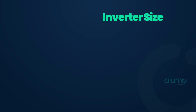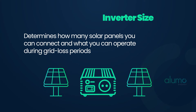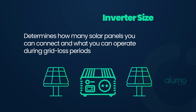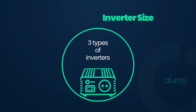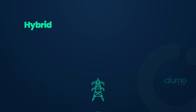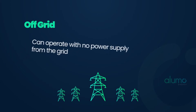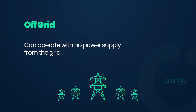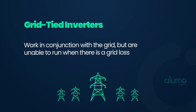The first thing to consider is the size of the inverter. The size inverter determines how many solar panels you can connect and what you'll be able to operate during grid loss periods. There are currently three types of inverters on the market: hybrid, which can work without grid connection or in conjunction with the grid; off-grid, which can operate with no power supply from the grid; and grid-tied inverters, which work in conjunction with the grid but are unable to run when there is a grid loss.